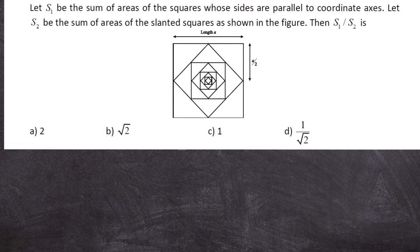Let S1 be the sum of areas of the squares whose sides are parallel to coordinate axis. Let S2 be the sum of areas of slanted squares as shown in the figure. Then S1 by S2 is.